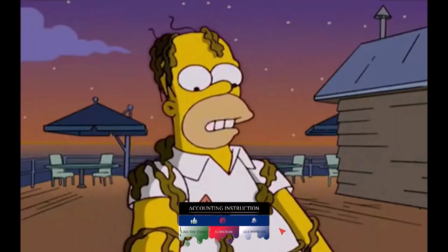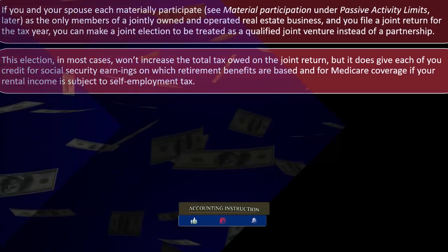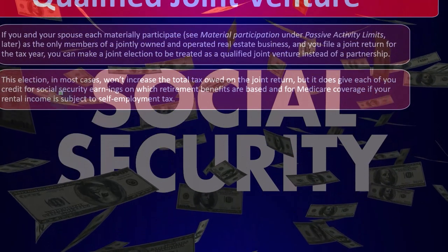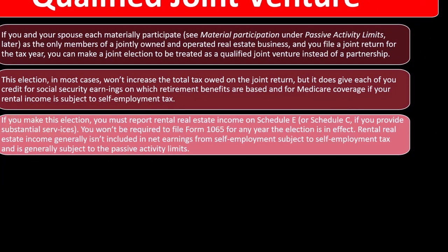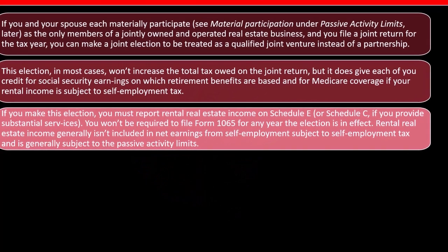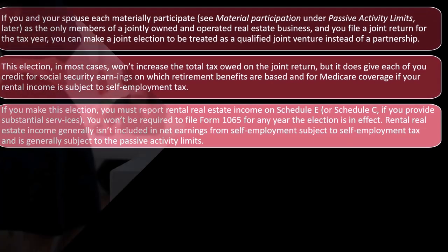This election, in most cases, won't increase the total tax owed on the joint return, but it does give each spouse credit for Social Security earnings on which retirement benefits are based, and medical coverage, if your rental income is subject to self-employment tax. If you make this election, you must report rental real estate income on Schedule E, or Schedule C if you provide substantial services. You won't be required to file Form 1065 for any year the election is in effect.